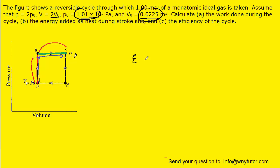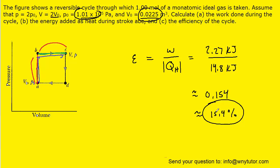And then part C is going to be relatively straightforward because we just have to take the work and divide it by the magnitude of the heat added. We figured out the work in part A as well as the heat added in part B. And we get roughly 0.154, which is 15.4%. So that would be the correct answer to part C.